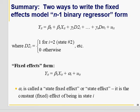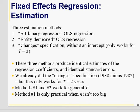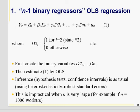We have n minus one binary variables, which means if n is large, you have to introduce a large number of binary variables. Another approach to solve this problem is to use demeaned regression — entity demeaned, time demeaned, or entity and time demeaned regression. If you have two time periods, then you can use the differencing technique we have already applied. You have d2 to dn minus one binary variables, estimable by OLS.